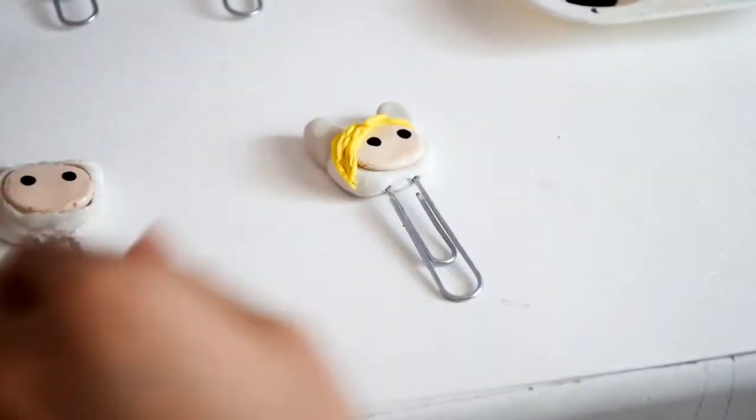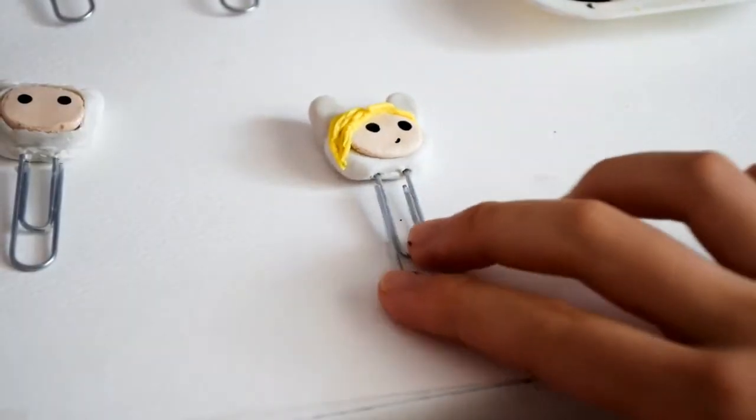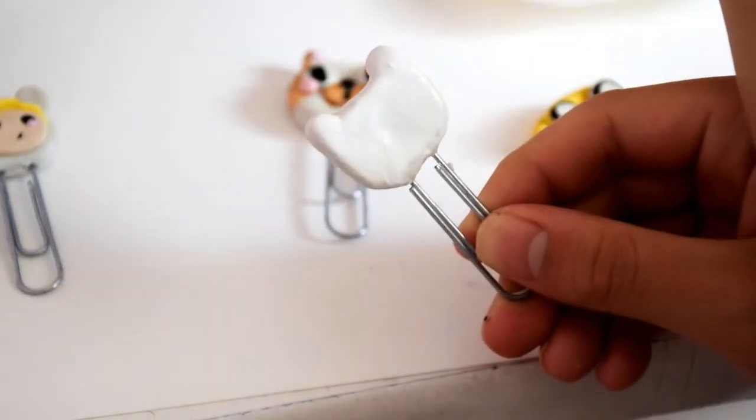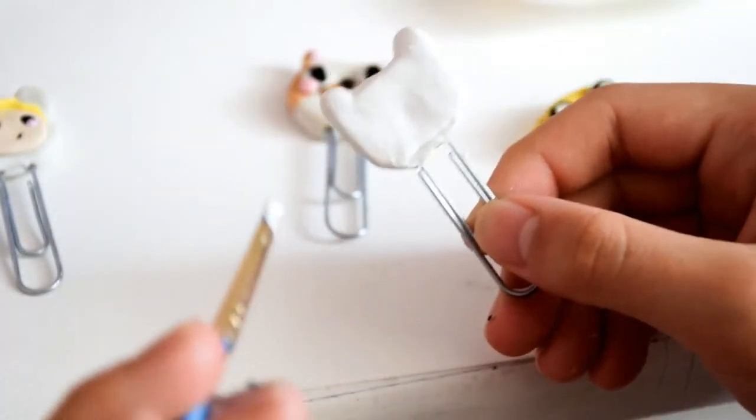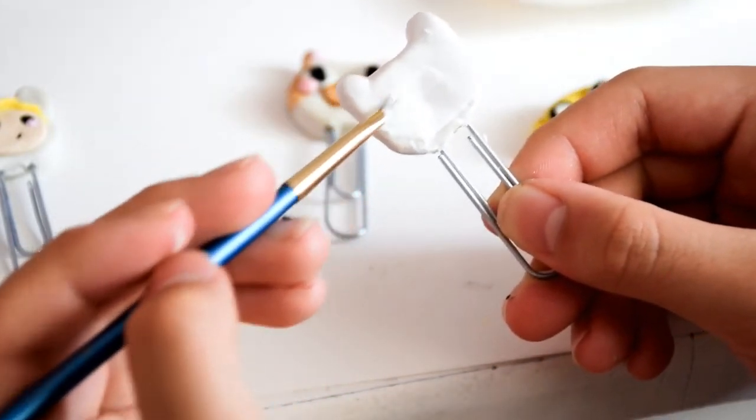And I'm just using the thin side of my ball tool to make a little mouth. Oh, and another thing, I painted the back of mine because it was kind of dirty. I just used white acrylic paint. And you can also glaze these after. I also ran out of glaze. So I didn't glaze mine.